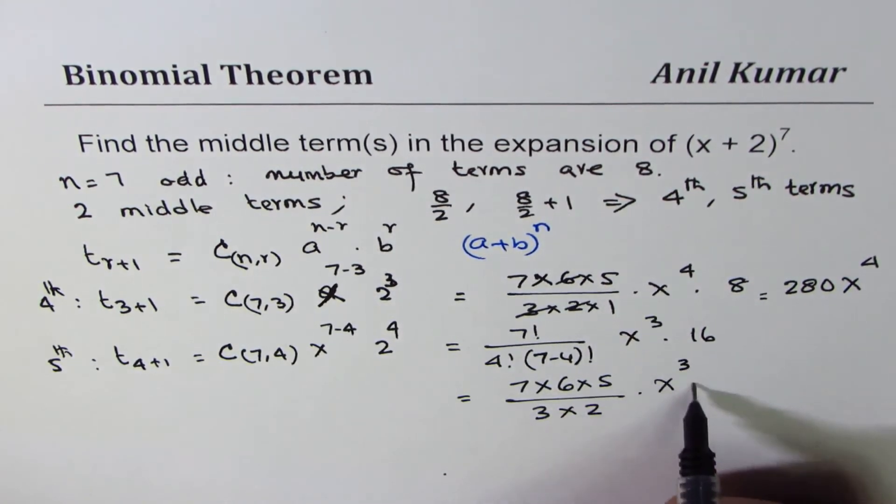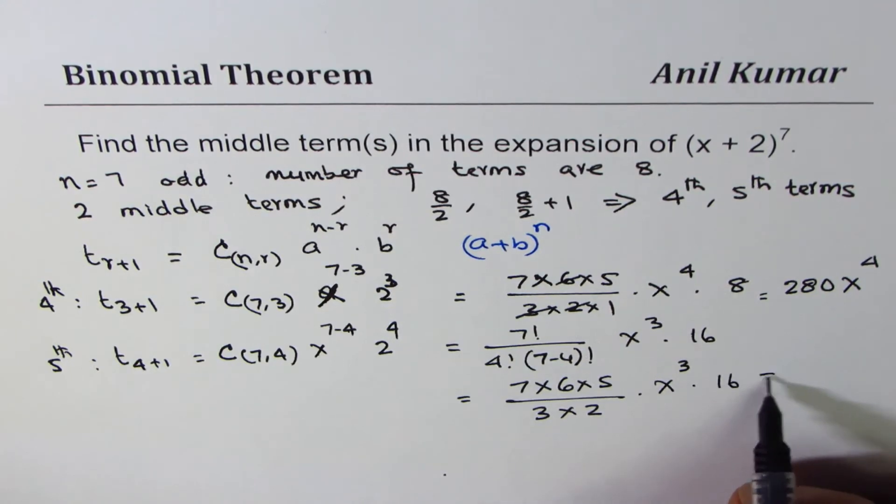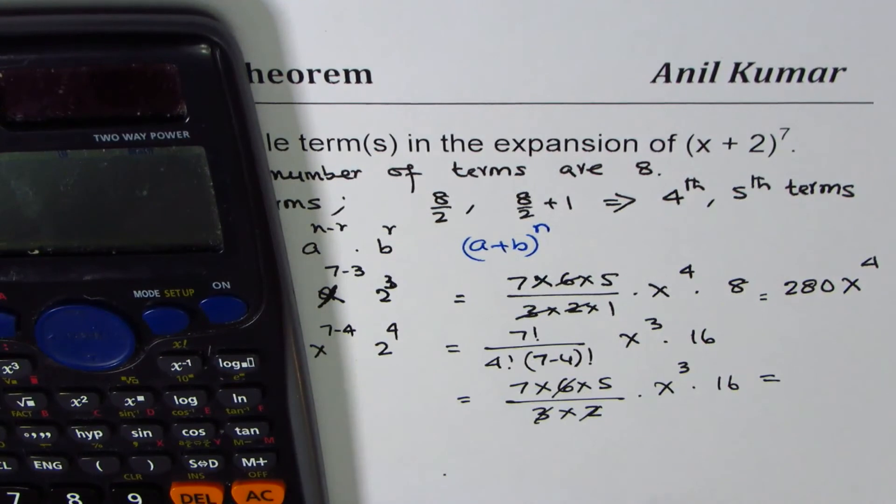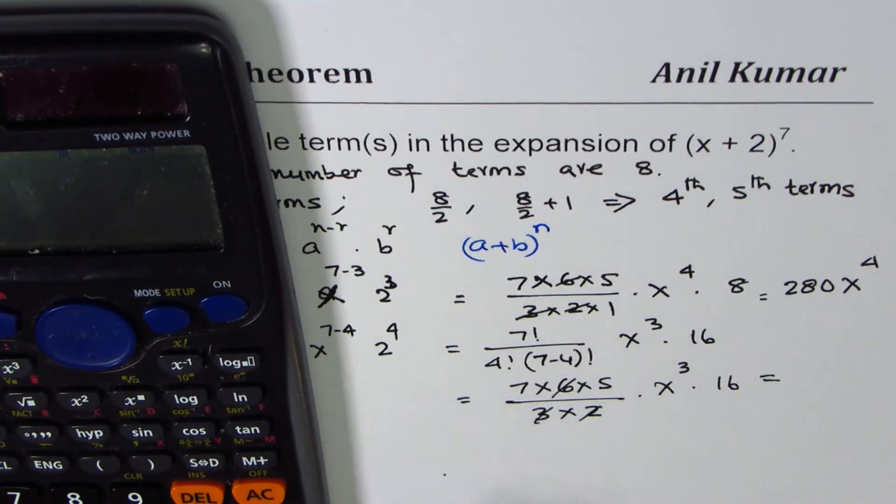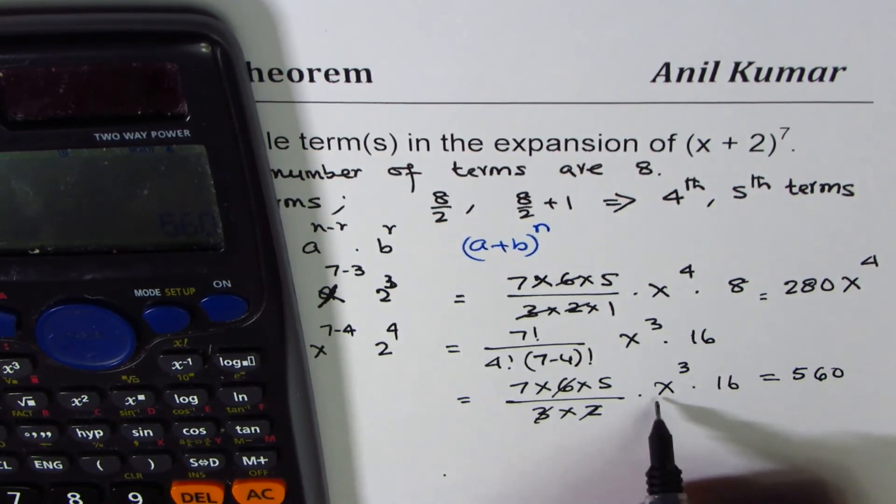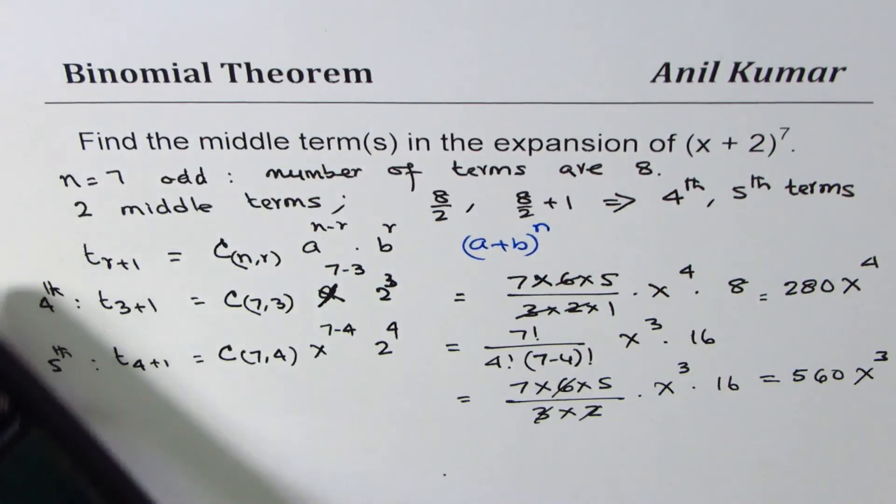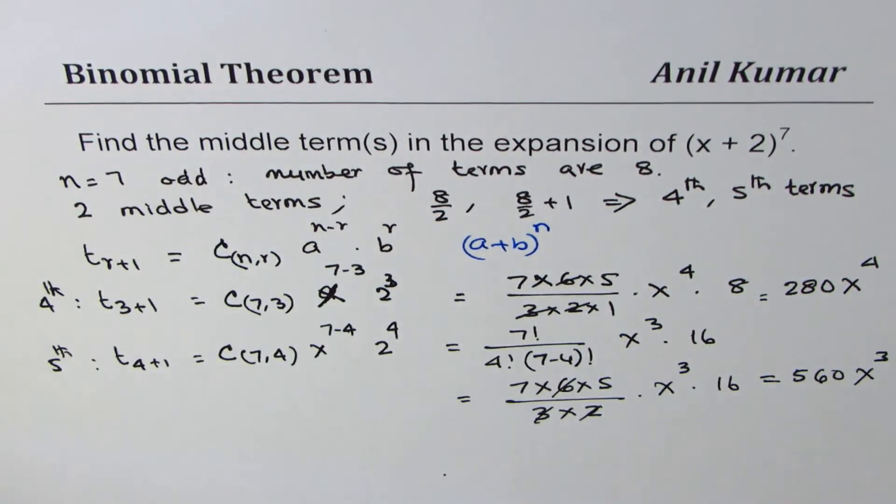Times X to the power of 3 times 16. So this number is exactly same as what we got earlier, 3 times 2 is 6. 35 times 16. So we get 7 times 5 is 35 times 16 equals 560X^3. So 560X^3 is the 5th term.